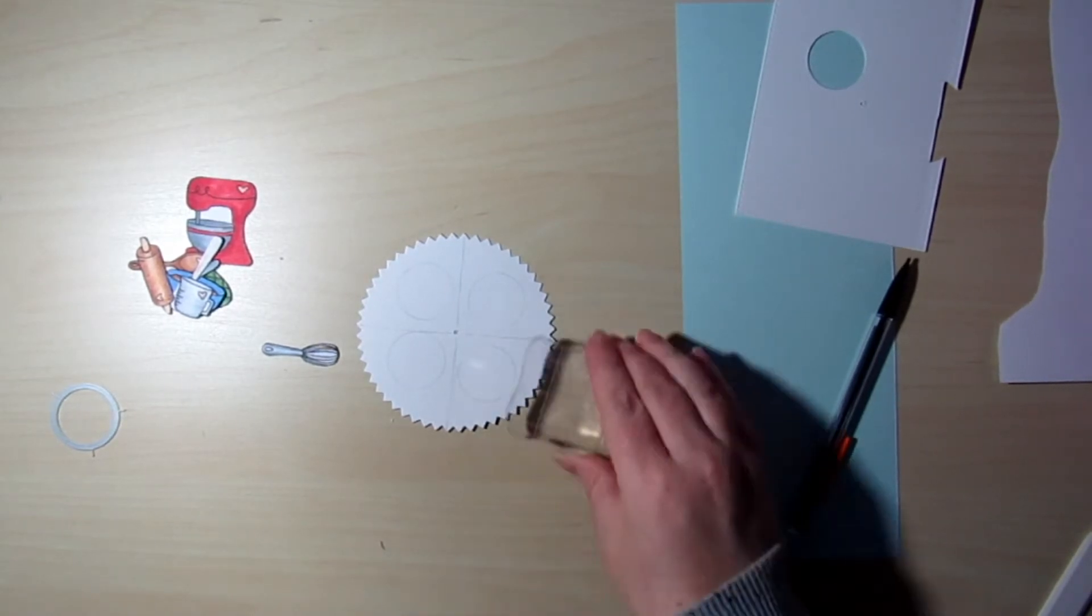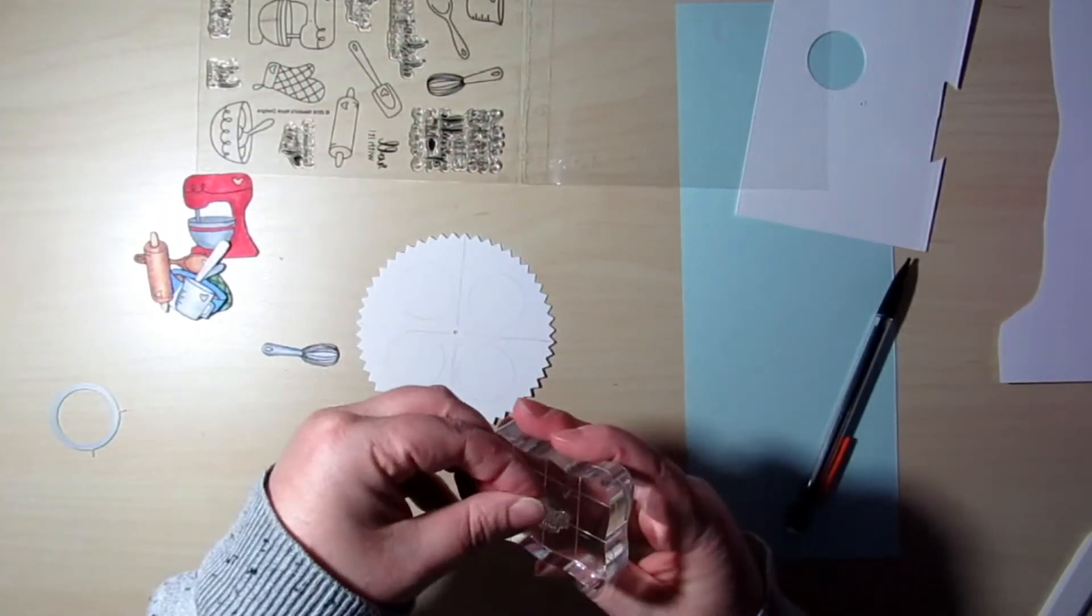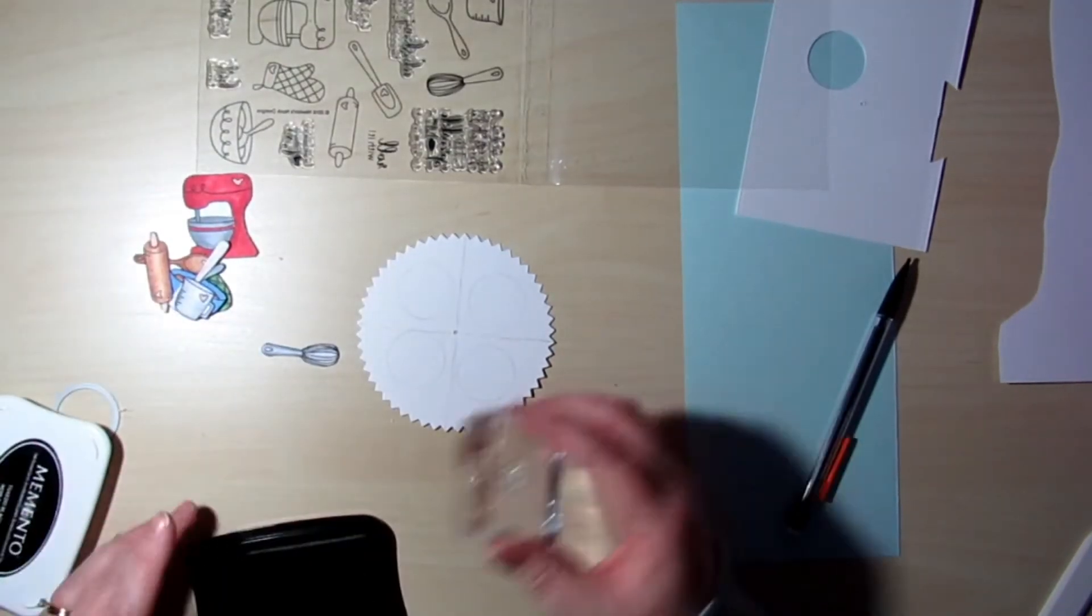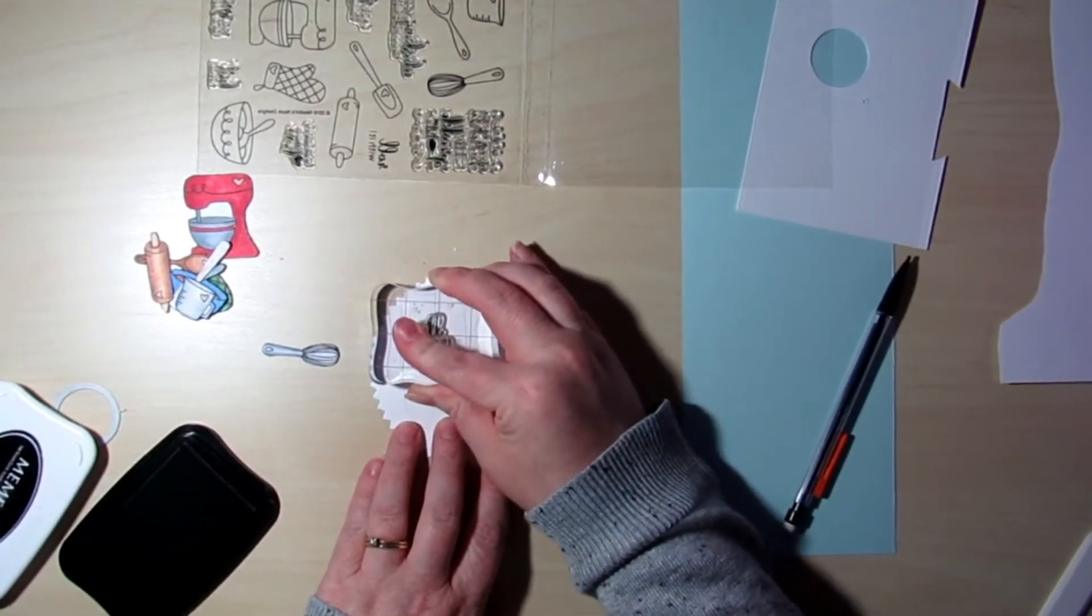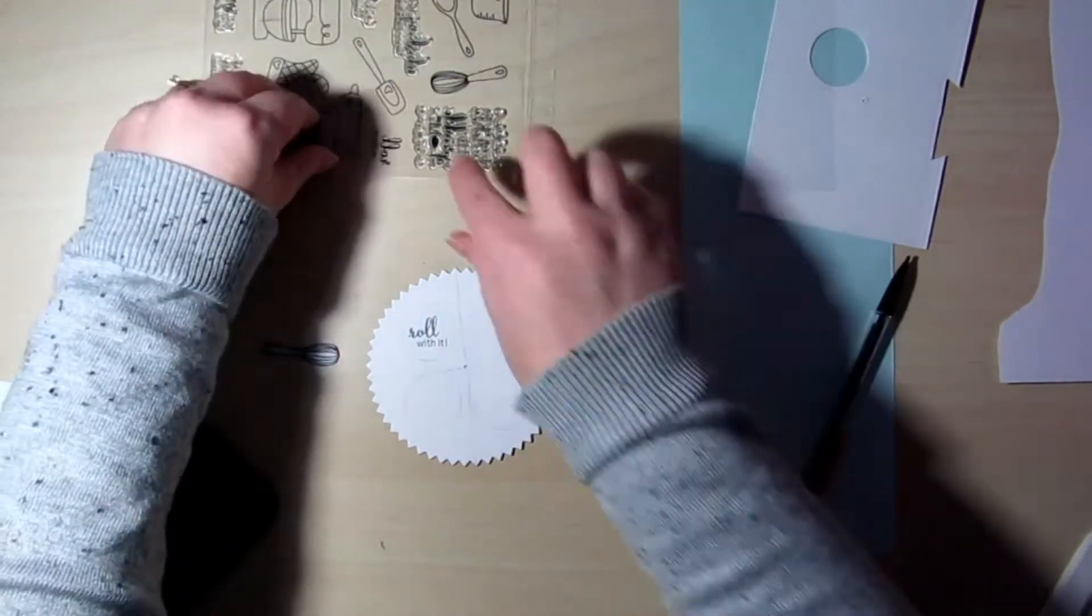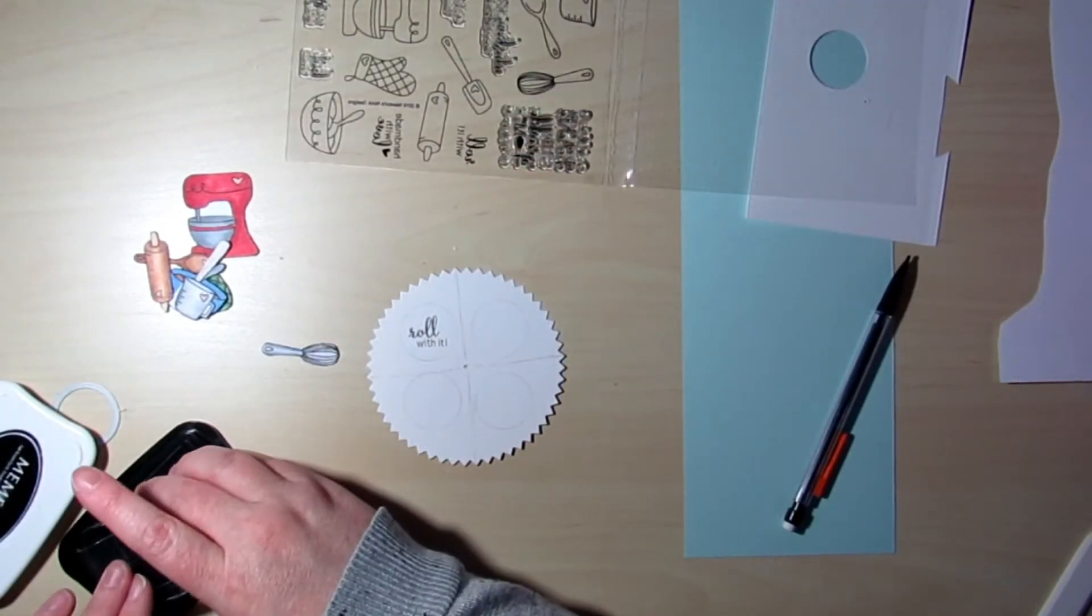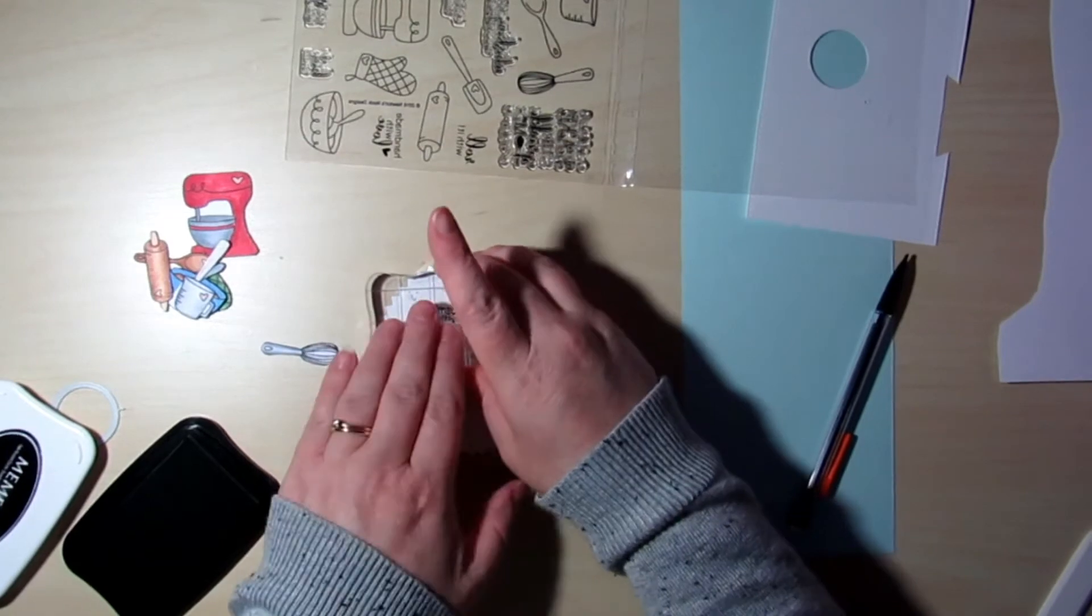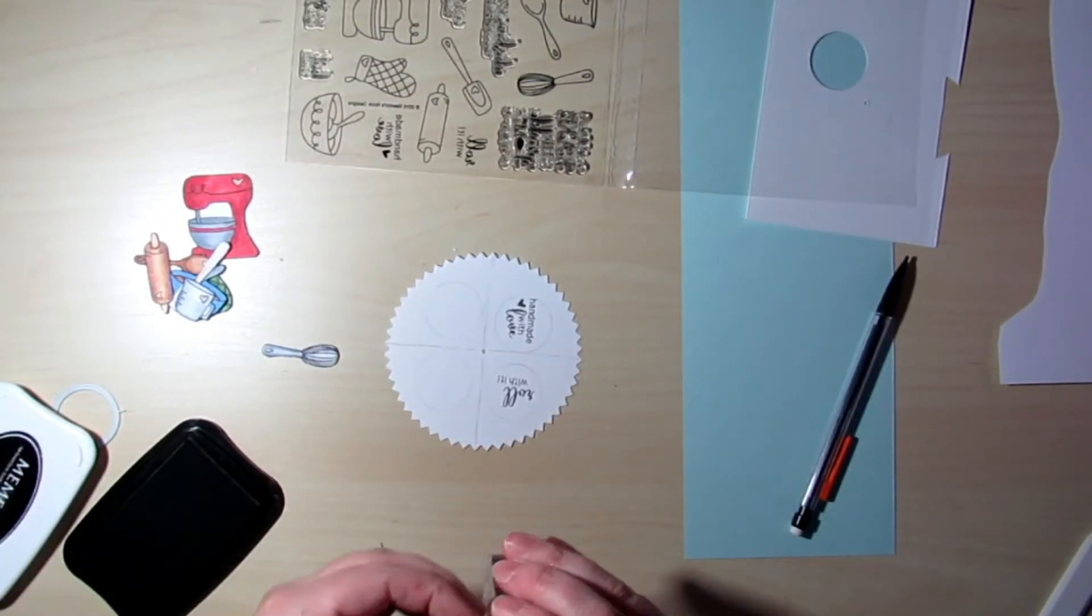So I'm going to go ahead and grab my first stamp here using the Memento Tuxedo Black ink. And I'm going to put it right there in the middle of that circle as best I can. And this one says roll with it. Then I kind of turn my paper like I would turn the wheel. And this one here says handmade with love.